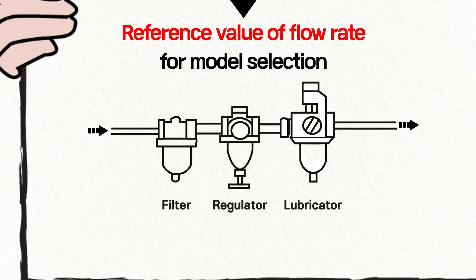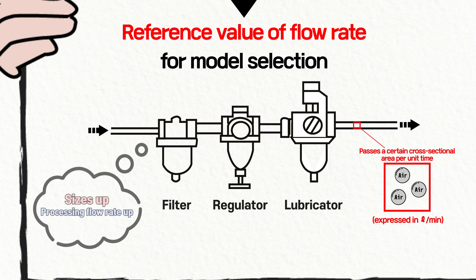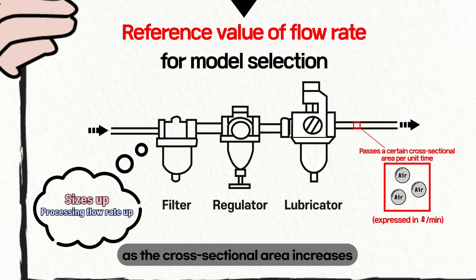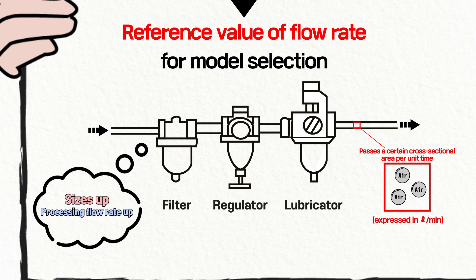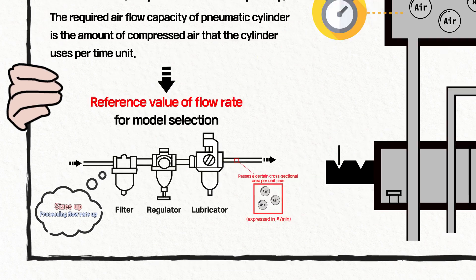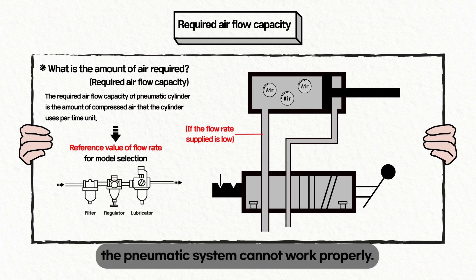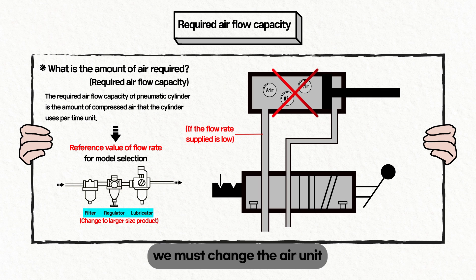Flow rate means the amount of fluid passing through a certain cross-sectional area per unit time. The amount of fluid passing increases as the cross-sectional area increases, since there is more space for air to flow. If the flow rate is bigger than the amount an air unit can handle, the pneumatic system cannot work properly. In that case, we must change the air unit to a bigger size.